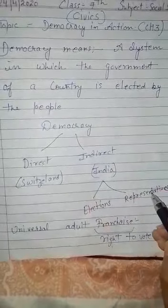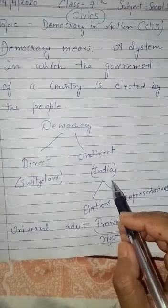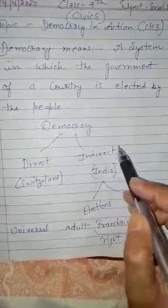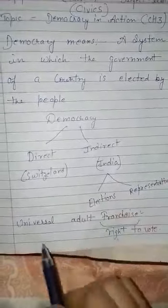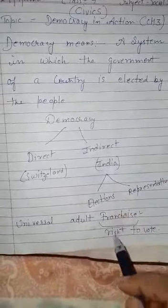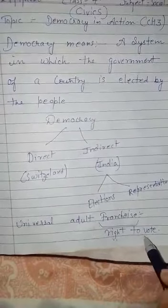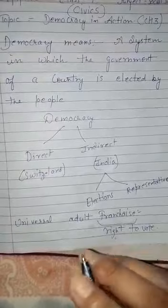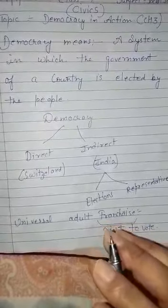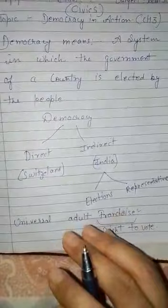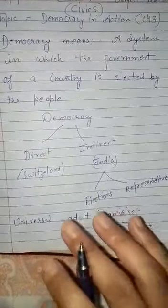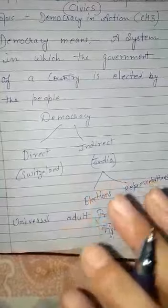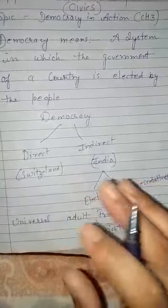Elections and representatives are two important elements, or tools, in indirect democracy. Now we will read about universal adult franchise. Franchise means right to vote. A democratic government becomes meaningful when all its citizens participate in elections. In modern democratic governments, all men and women who have attained a minimum prescribed age are allowed to vote and elect their representatives.